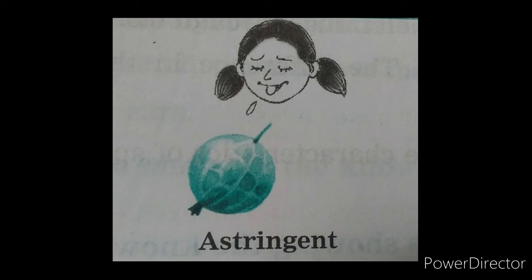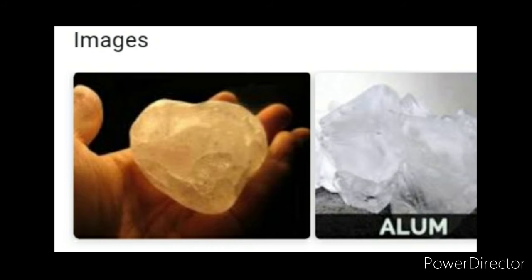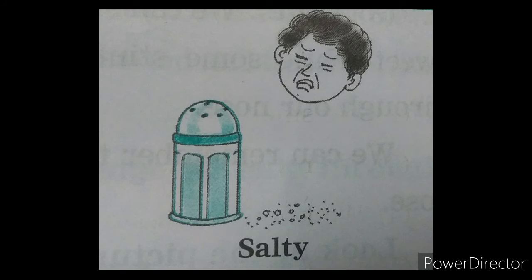Next one: astringent taste. A-S-T-R-I-N-G-E-N-T. Astringent means turat in Marathi. Alum has astringent taste. Next one: salty means kharat taste. Salt is an example of salty taste.